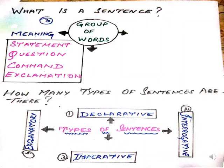So, what is a sentence again? The third part is meaning. What is meaning? Statement, question, command, exclamation. How many types of sentences are there? Four: declarative, interrogative, imperative, and exclamatory.